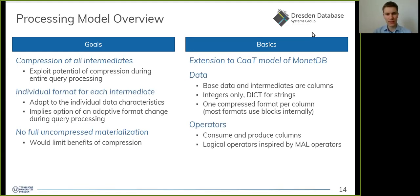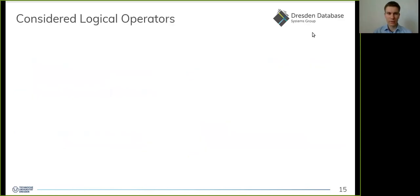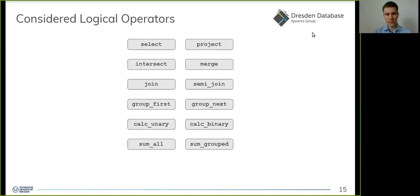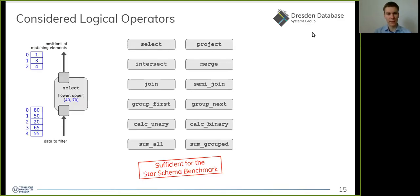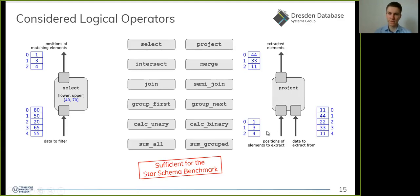Our operators consume and produce columns and have been inspired by the MAL operators from MonetDB. At the level of a query execution plan, we fully materialize all intermediate results using lightweight integer compression algorithms. We currently support 12 operators for columnar data. They suffice to execute the well-known Star Schema Benchmark. For example, the select operator takes an integer sequence as input, is parameterized with a lower and upper bound, and stores the positions of matching data elements in its output. This list of positions is again a sequence of integers and can be used in the project operator to extract corresponding data elements from another column.